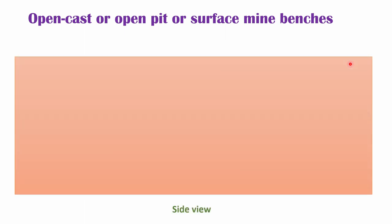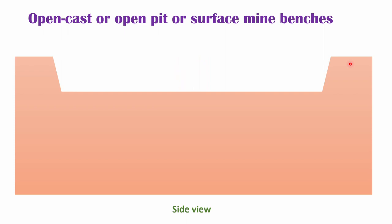Suppose this is the block which has to be developed through the surface mining benches. One horizontal layer is being extracted and bench number one is being formed. This is the crest of the bench. This is the top of the bench and this edge is the height of the bench. Again, for extraction of more mineral or more rock, we have to open another bench below bench number one.